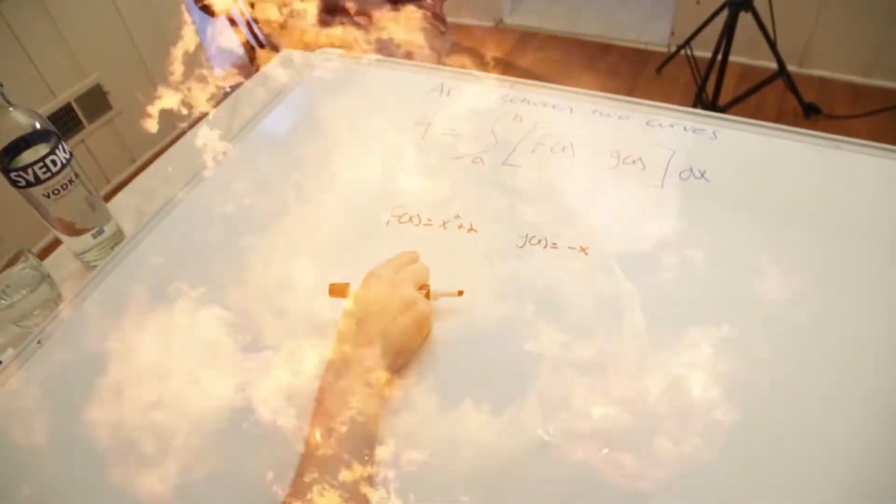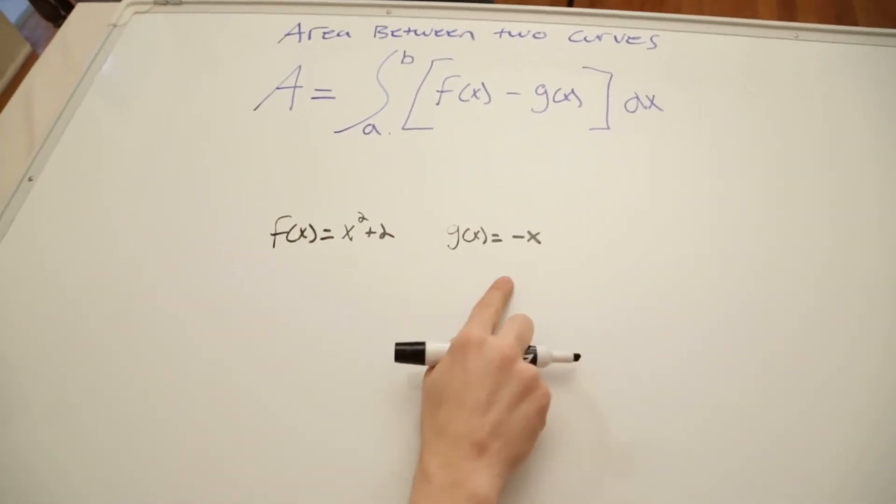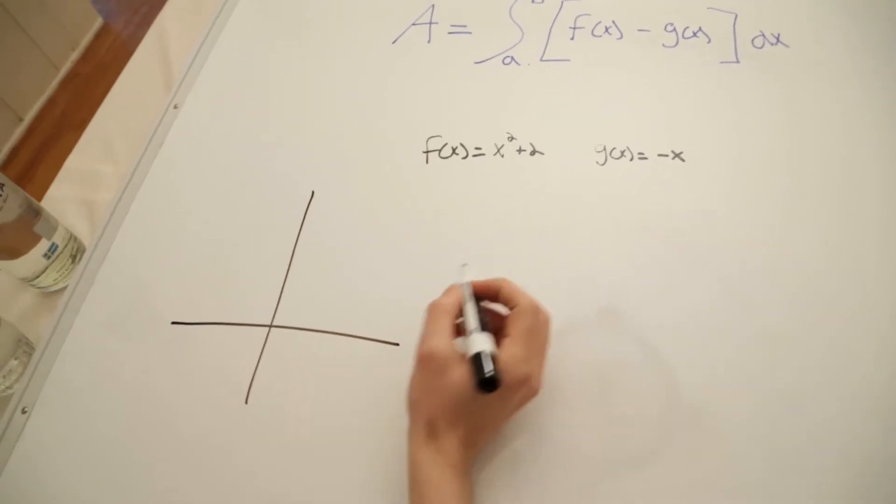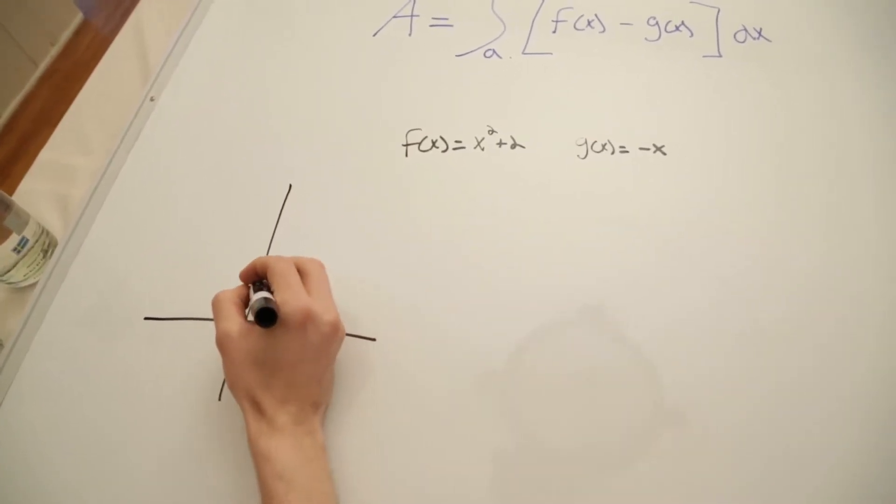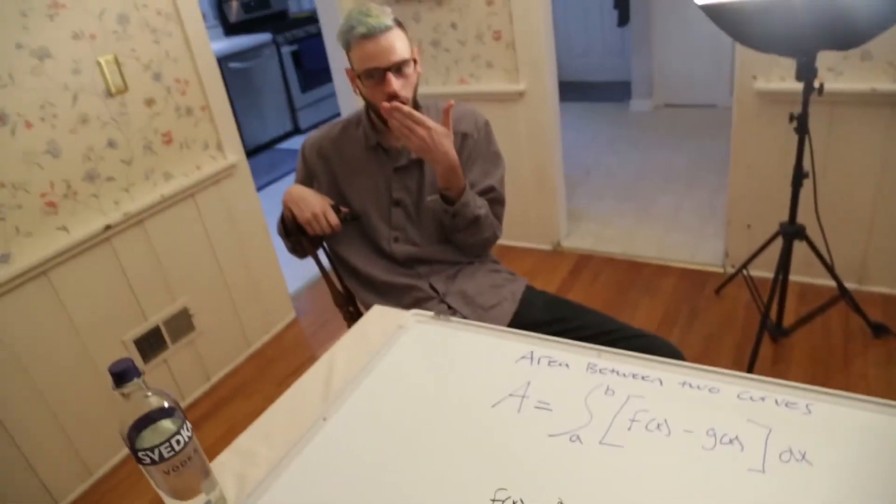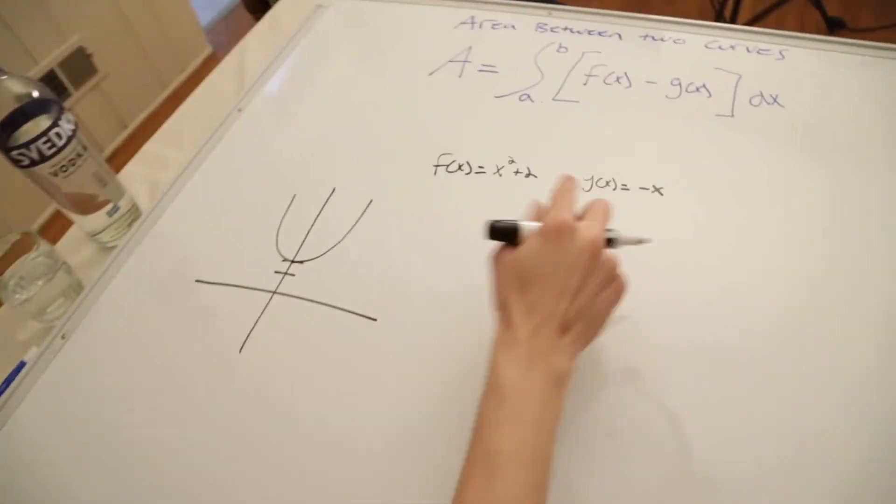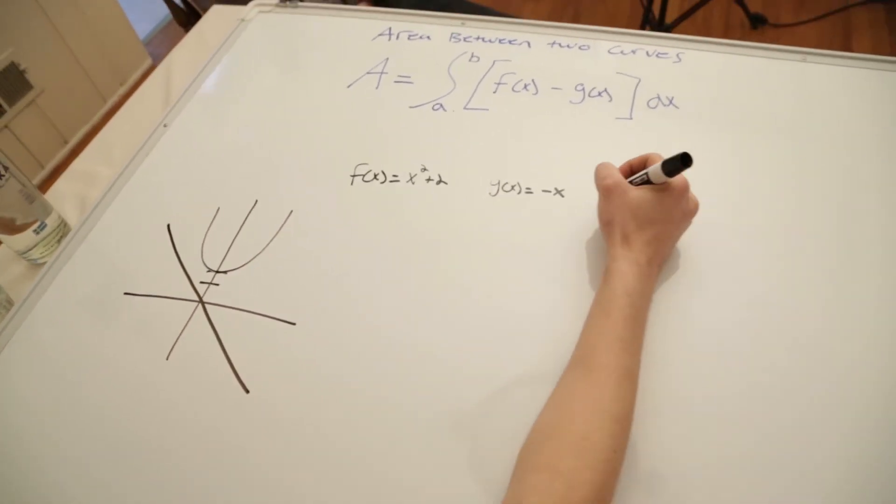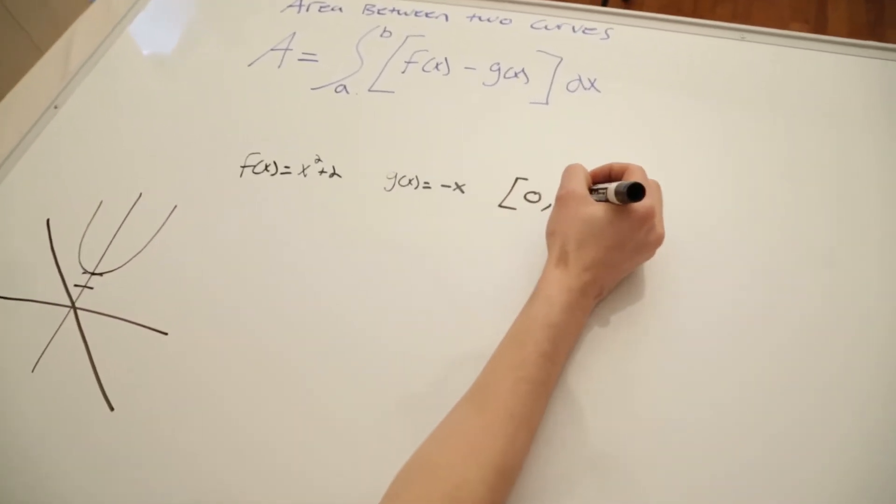Let's start here. We're going to find the area between x squared plus two and negative x. Let's get our graph going. We know that x squared plus two is going to be a parabola starting up two on the y axis. And then g(x) negative x is going to be coming down this way. The interval for this problem is from zero to one.